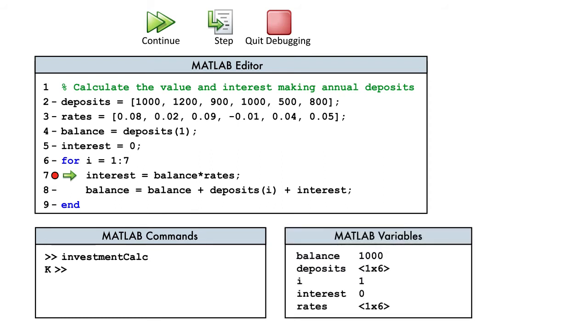We also see the current values of variables in the workspace. Notice that the loop variable i is 1, and variable interest is 0 because the code was stopped before line 7 was executed.